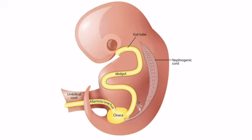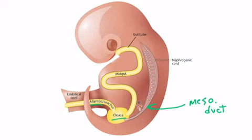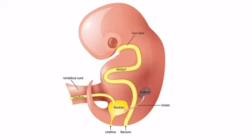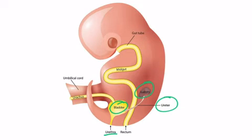This image demonstrates urine during the first trimester: it flows down the mesonephric duct into the cloaca, then out the allantois or urachus depending on which week of the first trimester, and then enters the umbilical cord. This next image demonstrates urine during the second and third trimesters. By this point, the kidney and ureter have formed, as have the bladder and urethra, and so urine can be excreted out the urethra and into the amniotic fluid.